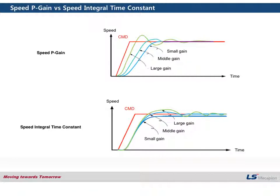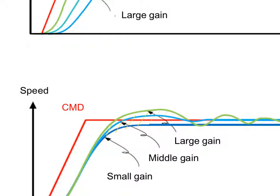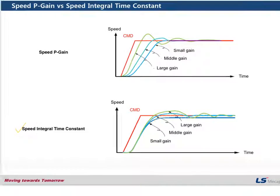The difference between P gain and integral gain is as follows: speed proportional gain is related to the system's response time, and if the value is higher the system response will be faster, but if it is too high, overshoot or oscillation might occur. The speed integral time constant adjusts the steady-state deviation, but if it's too high, overshoot or oscillation might also occur.